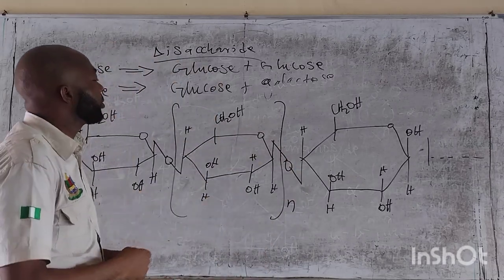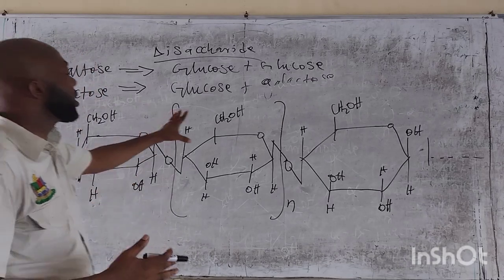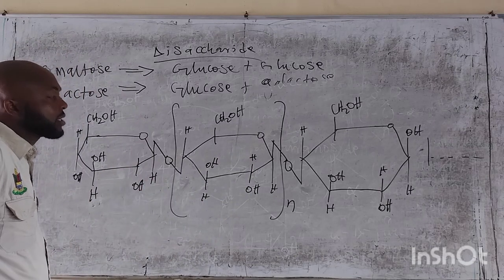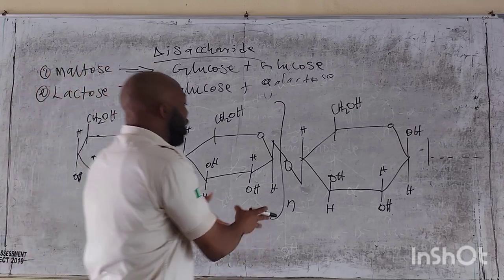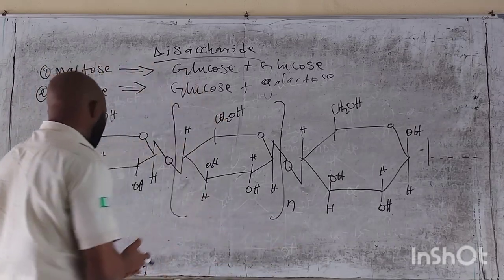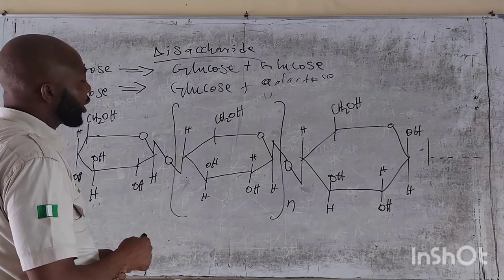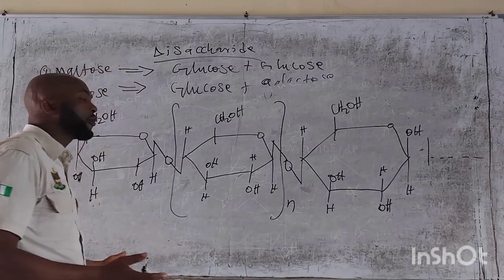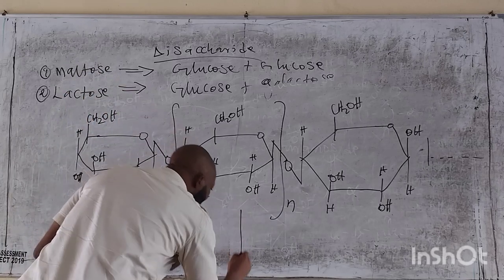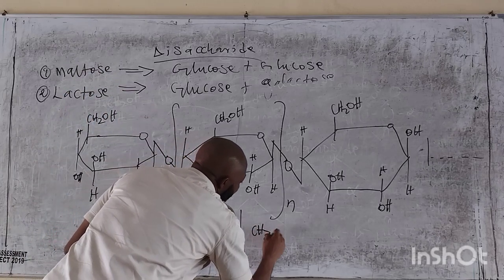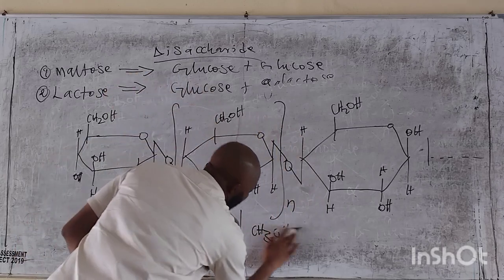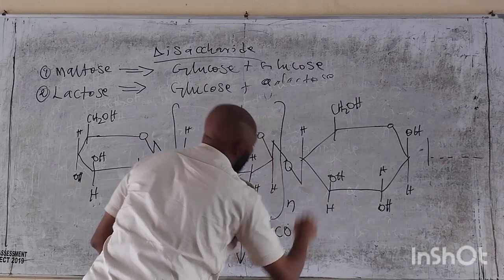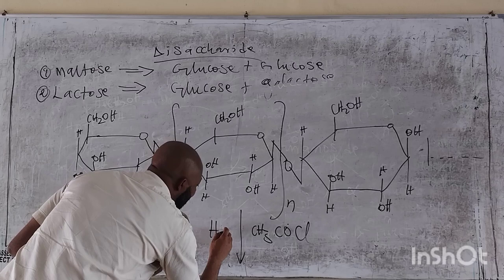If this is true, how then can we hydrolyze this to get our glucose back? Hydrolysis can take place, but certain reactions can also occur when we are dealing with cellulose. First of all, we can react cellulose with ethanoyl chloride — CH3COCl — in the presence of H2SO4.